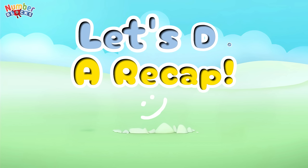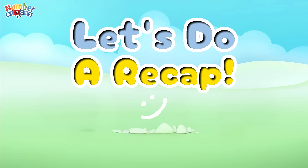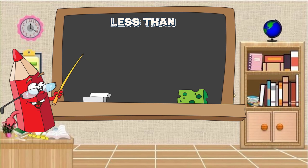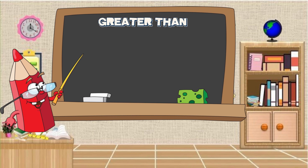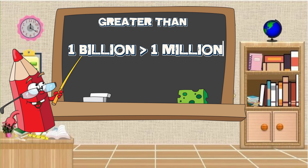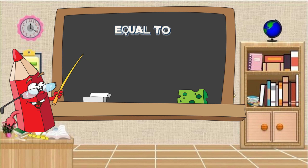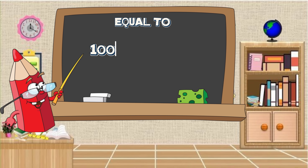Now join me and let's do a recap. Let's try the less than symbol. Four hundred is less than six hundred. Next, greater than: one billion is greater than one million. Now, equal to: one hundred plus one hundred is equal to two hundred.